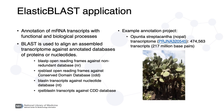An example of such a process would be the annotation of Opuntia Streptacantha, commonly known as the prickly pear or nopal, which is shown in this picture. Its assembled transcriptome is composed of 474,500 transcripts, comprising 217 million base pairs.